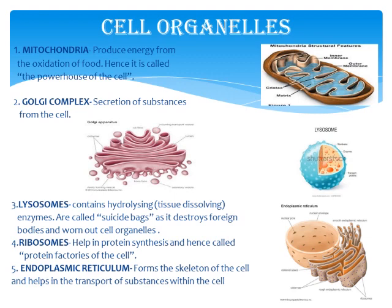Next is the Golgi complex, which secretes substances from the cell — such as hormones and enzymes. Hormones are chemical messengers: they carry messages from one place of the cell to another in the form of chemicals. Enzymes are also produced by the Golgi complex. Many chemical reactions are continuously going on in our cells, and enzymes increase the rate of these chemical reactions. Enzymes are actually proteins.